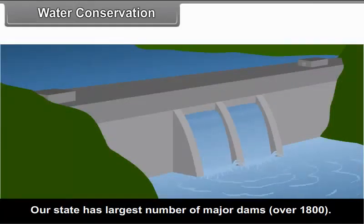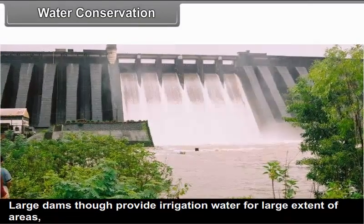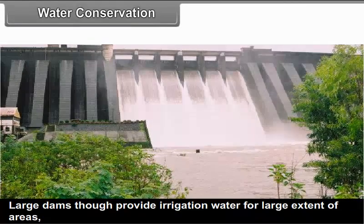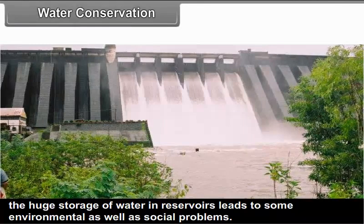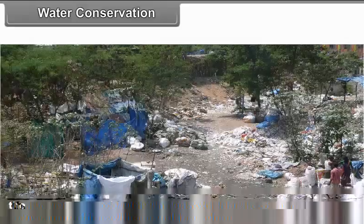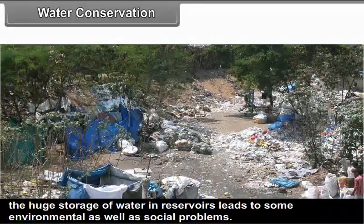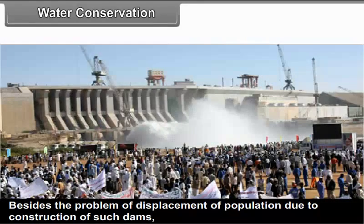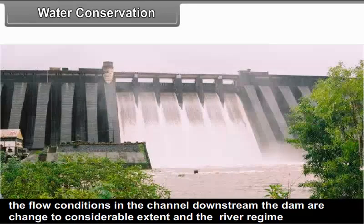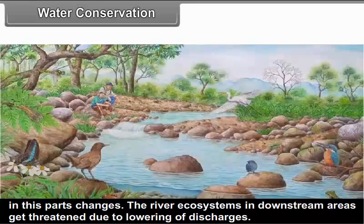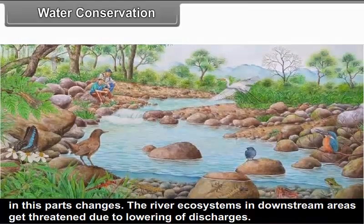Our state has the largest number of major dams — over 1,800. Large dams, though they provide irrigation water for large extents of area, the huge storage of water in reservoirs leads to some environmental as well as social problems. Besides the problem of displacement of population due to the construction of such dams, the flow conditions in the channel downstream of the dam change to a considerable extent, and the river regime in these parts changes. The river ecosystems in downstream areas get threatened due to lowering of discharges.